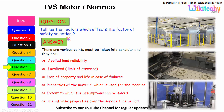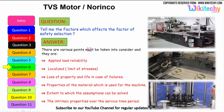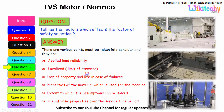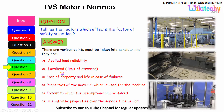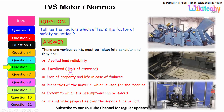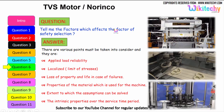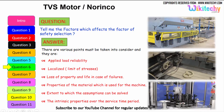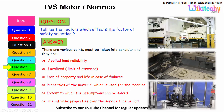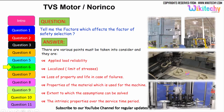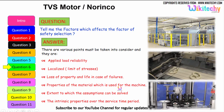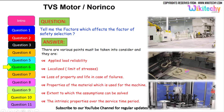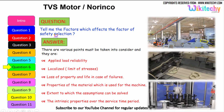Now let us see the factors which affect the selection of factor of safety. These include: the applied load reliability, the limit of localized stresses, the loss of property and life in case of failure, the properties of the material used for the machine, the extent to which assumptions can be validated, and the intrinsic properties of the material over its service time period.